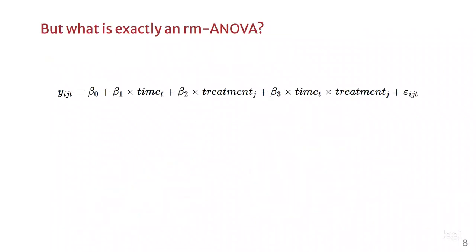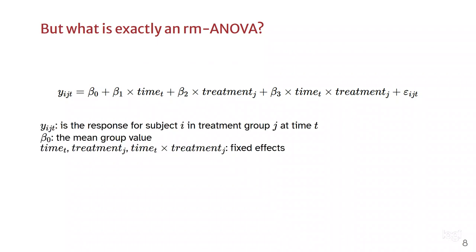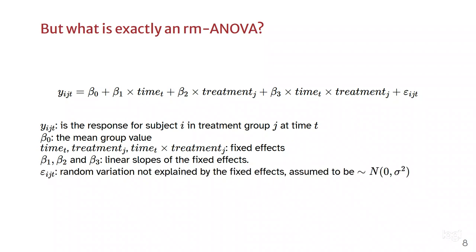A repeated measures ANOVA is nothing more than a linear model that uses an intercept, some fixed effects, linear slopes, and an error term to try to explain an observation. So basically, it's just a line.